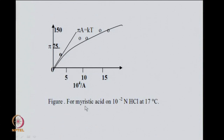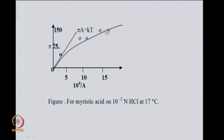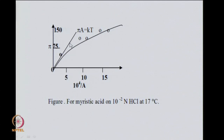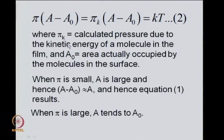These data have been obtained for myristic acid on 0.01 normal HCl at 17°C. Pi versus 10⁴/A plotted for myristic acid gives a curvilinear behavior for which pi·A = kT is the asymptotic tangent. Pi is inversely proportional to A, with the proportionality constant depending on temperature, giving pi·A = kT. We see that the ideal surface equation of state is valid only for very low pressures or very large areas.